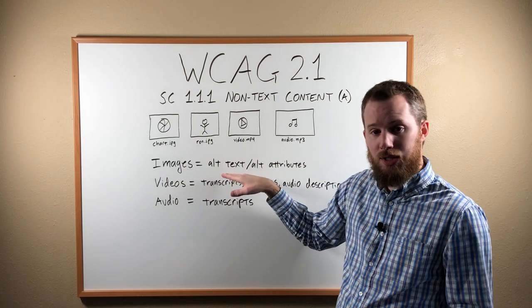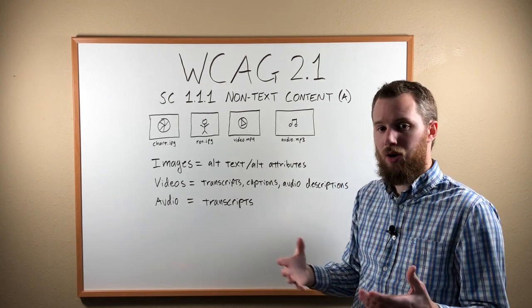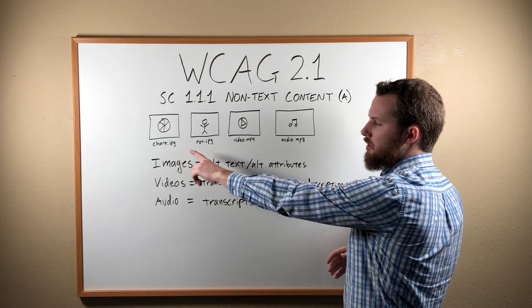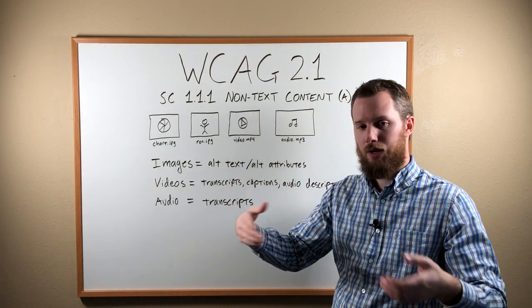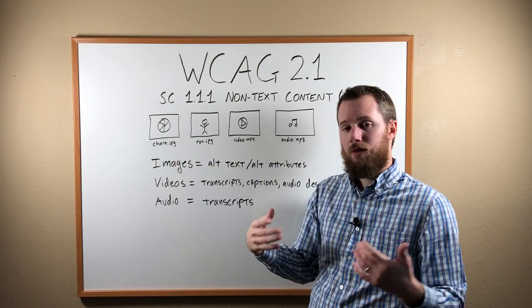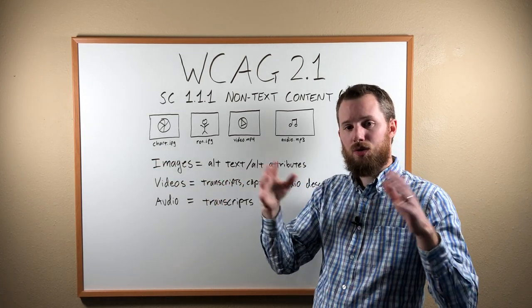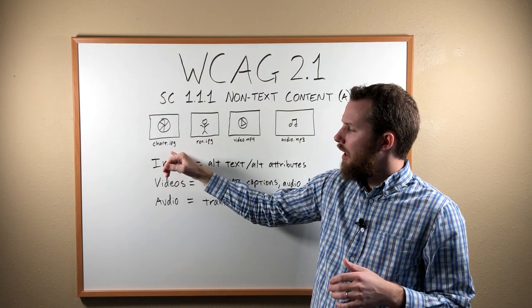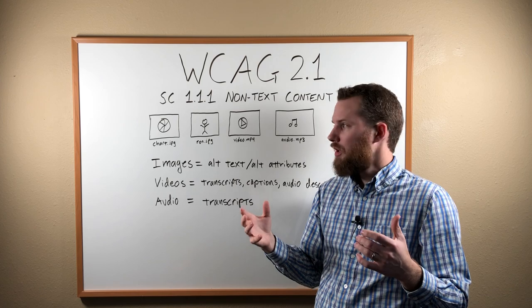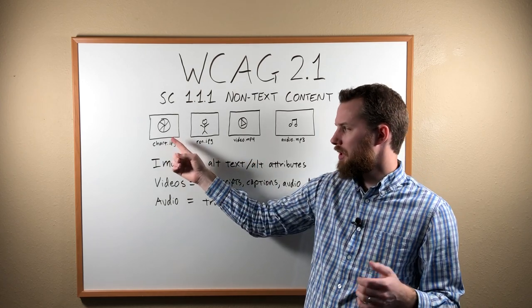Images need what we call alt text — technically it's called alt attributes, and sometimes people say alt tags, but that's incorrect and actually refers to PDFs, which is a separate conversation. If you're looking at an image of a chart, you as the website owner, content creator, or publisher need to provide alternative text to adhere to the success criterion. So if this is a chart that conveys meaningful information, you'd have chart.jpg with alt text coded in your HTML markup saying something like: 'Chart that shows all coffee houses in America broken down by owner — Starbucks has 27%.' That alt text helps people understand what's going on inside the chart.